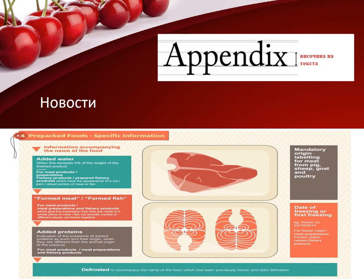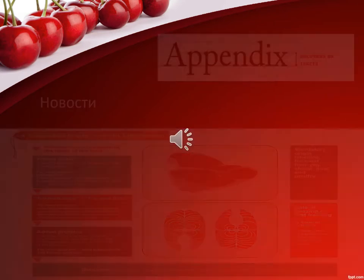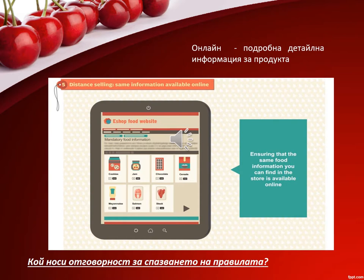Does the regulation apply when selling food online? Yes, it does. In this case, the compulsory elements — without the expiry date — are provided before signing the purchase contract. This information should be reflected in the material accompanying the distance selling, such as a website or catalog, or by other appropriate means. This requirement is not applicable to food sold through food vending machines.